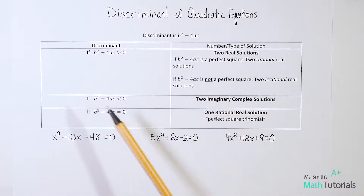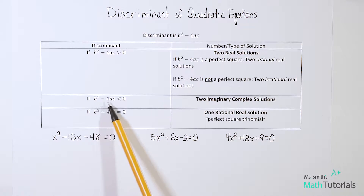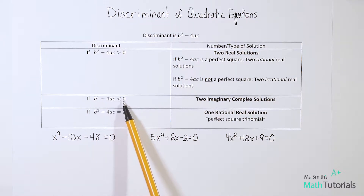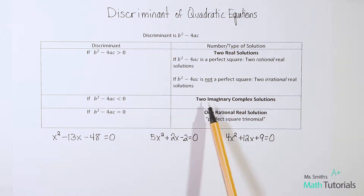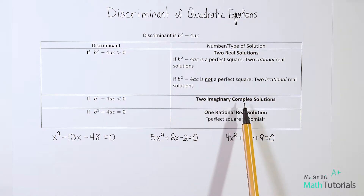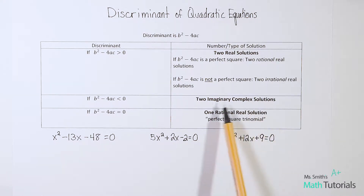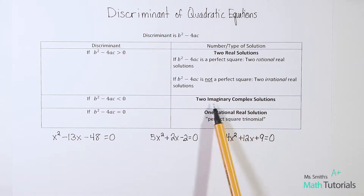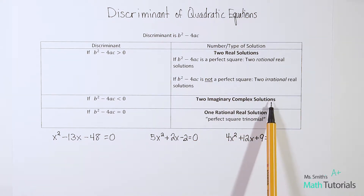What if you simplified your discriminant and it was less than zero — a negative number? Then your answer would be two imaginary complex solutions, so that would be an imaginary number situation.